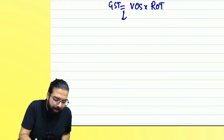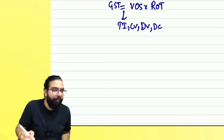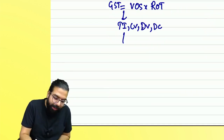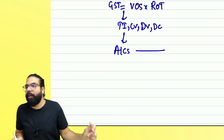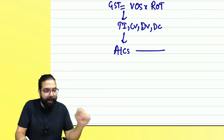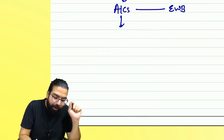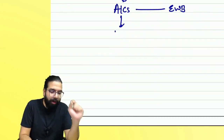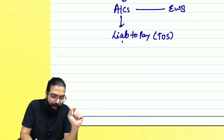Once you know the value, you will go ahead and prepare the tax invoice, credit note, debit note and delivery challan. Then you will maintain your accounts and records, and you will send the goods to the other person with the help of the e-way bill.